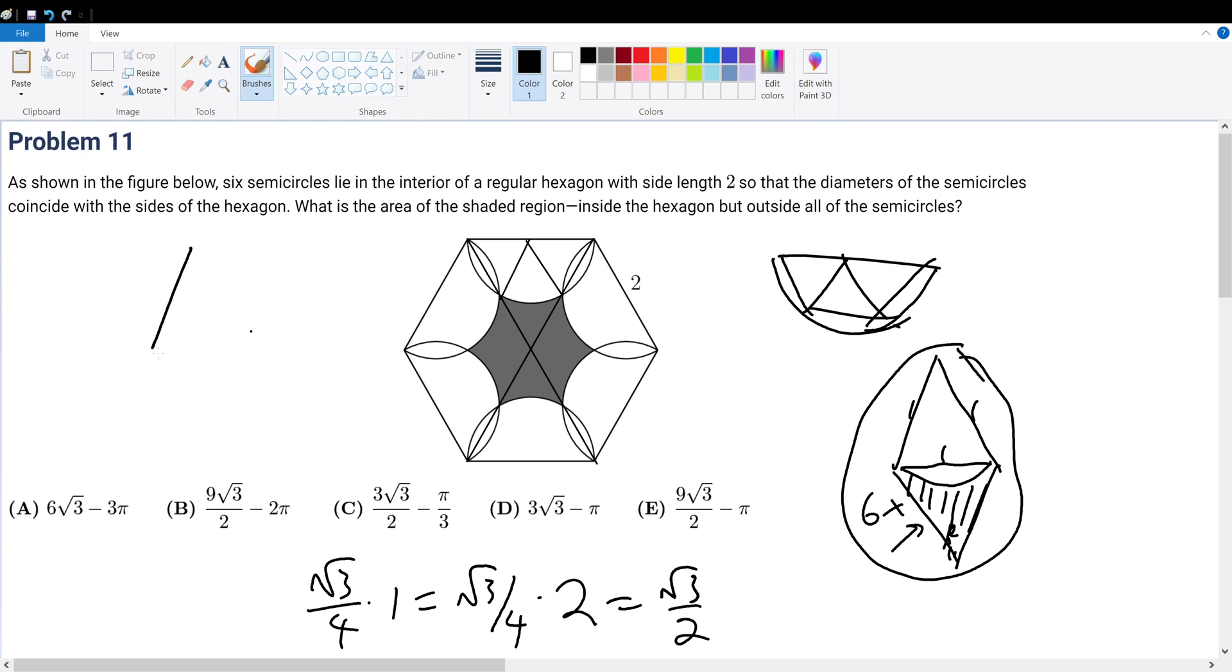And then we can find the area of this little arc thing. Well, the arc thing, since it's an equilateral triangle, this would be 60 degrees. Therefore, that would be 1 sixth of the entire circle, which is 1 sixth times pi times r, which is just 1 squared, becomes pi over 6. So root 3 over 2 minus pi over 6 will be the region right here.